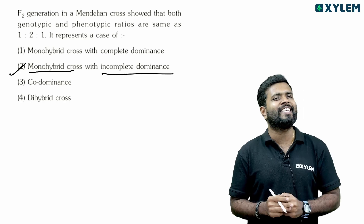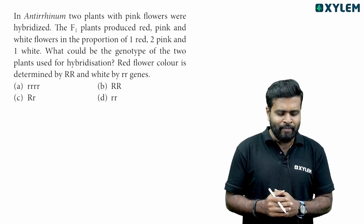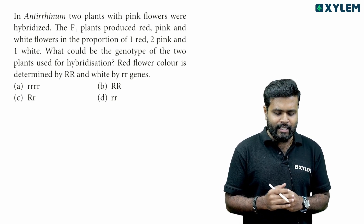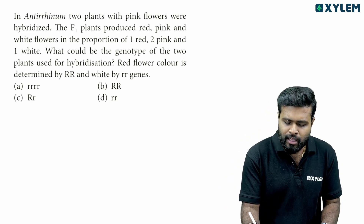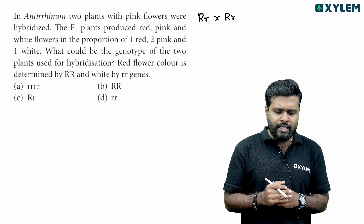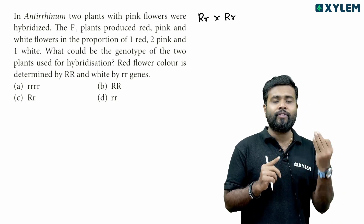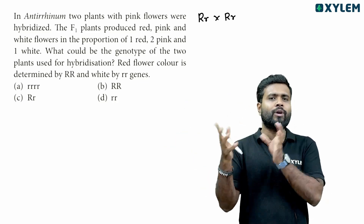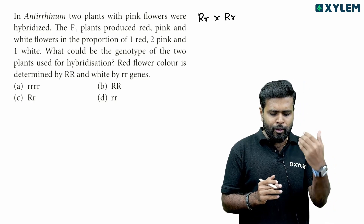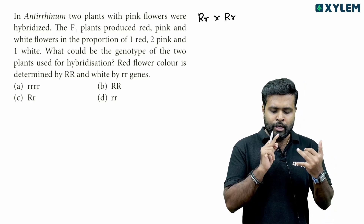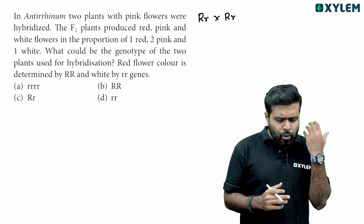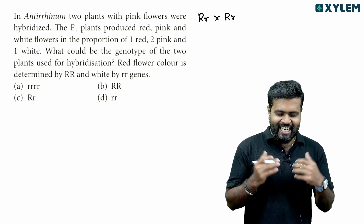Next question: In Antirrhinum, two plants with pink flowers were hybridized. The F2 plants produced red, pink and white flowers in the proportion of one red, two pink and one white. What could be the genotype of the two plants used for hybridization?